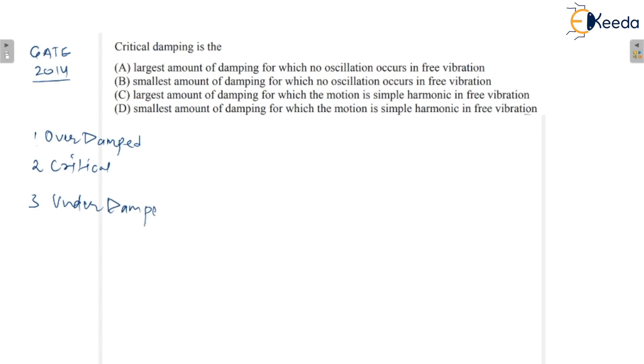Now what is the difference between them? Over damped and critical damped systems are not vibratory systems. That means in these two damping systems, there is no oscillation. What is the meaning of oscillation? Oscillation is basically a simple harmonic motion.